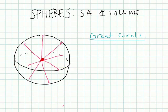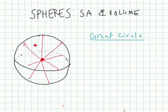So from this center point, if the point was up here, it's going to be a lot closer from there than it is all the way to the other side. That's not what we're talking about. But from the center, all points that make up the sphere will be equidistant.